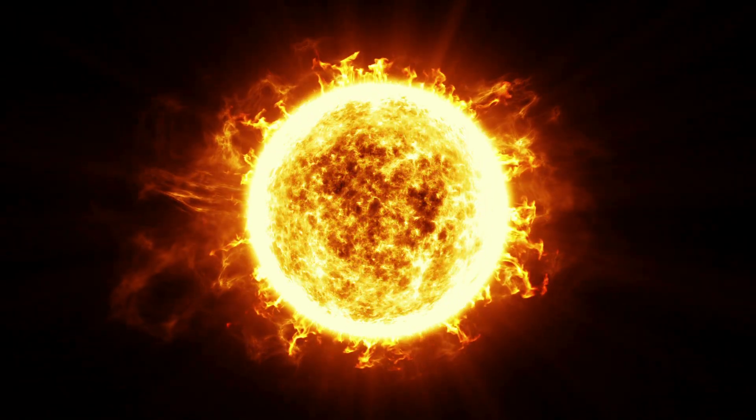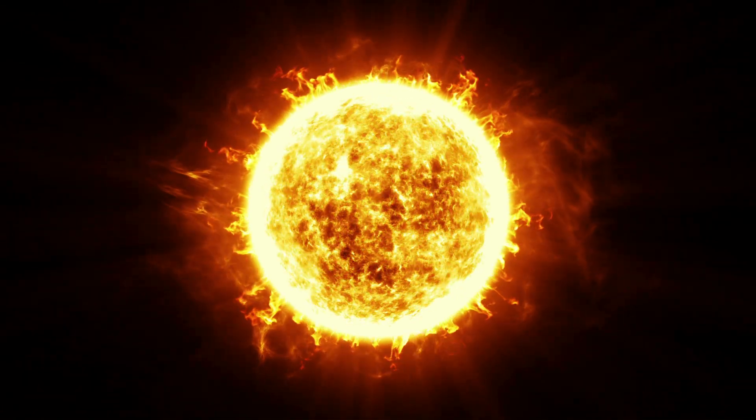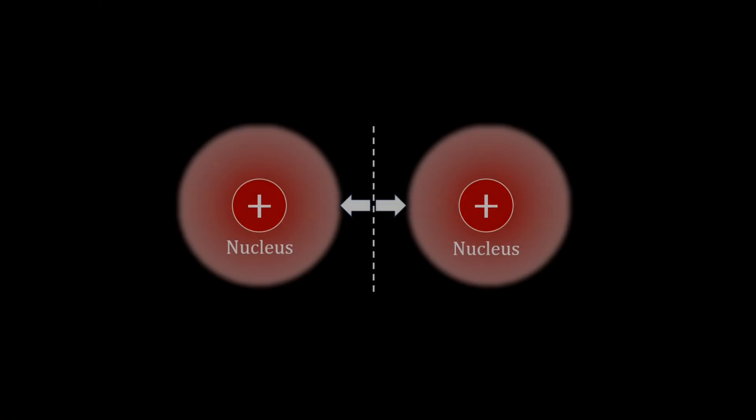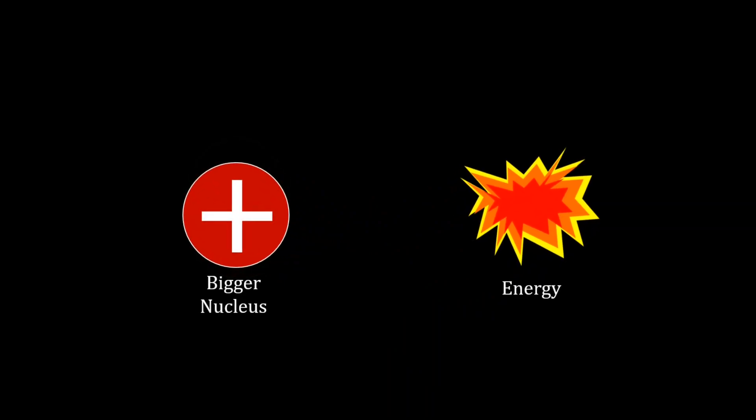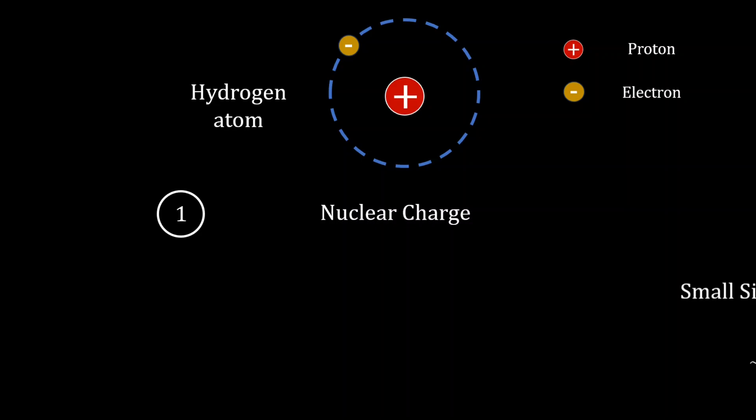Starting first with fusion, the process powering the stars relies on being able to force two smaller nuclei together against the Coulomb repulsion of the nuclei to make a bigger nucleus, and releasing energy in the process. Hydrogen features in the most promising fusion reactions, owing to its small size, low nuclear charge, and general abundance.